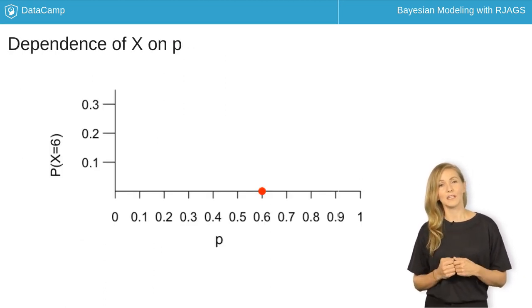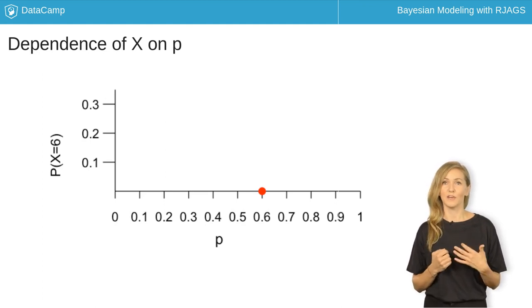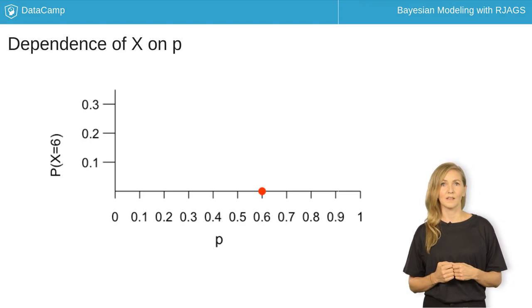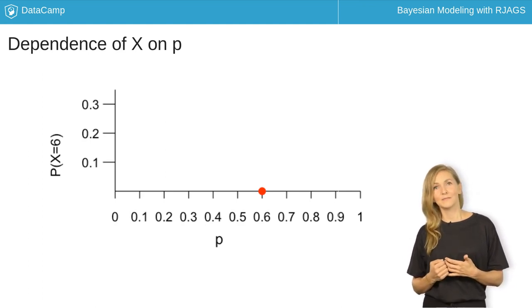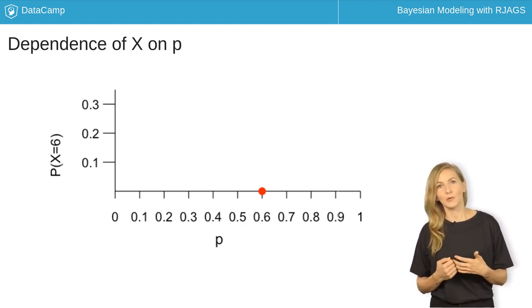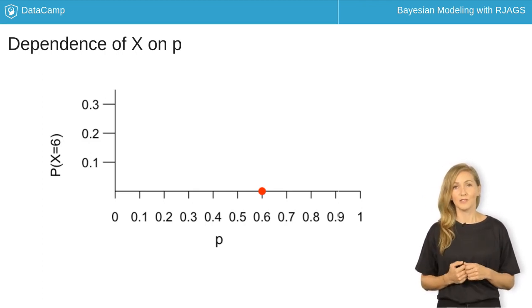The binomial model provides the tools needed to quantify the probability of observing your poll result under different election scenarios. This result is represented by the red dot. X equals 6 of n equals 10, or 60 percent of voters support you.